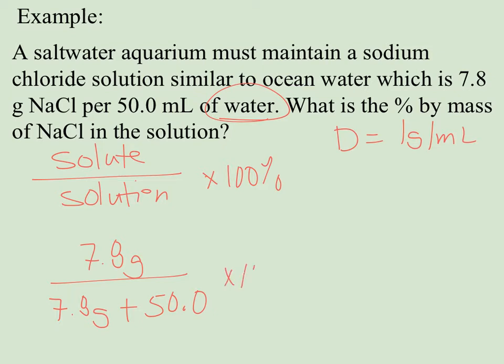So now I have my problem set up 7.8 grams over the total solution which is going to be 57.8. So now when I go ahead and divide that and multiply by 100 I come up with a percent by mass of 13.5 percent.